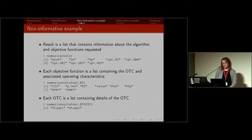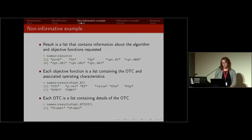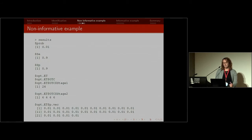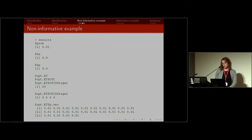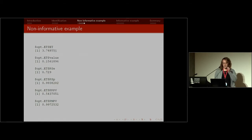Each objective function is a list containing the optimal testing configuration and the associated operating characteristics like accuracy measures. Each OTC is a list of stage 1 and stage 2 pool sizes. In three-stage testing, the stage 1 pool size is the 50 individuals you start with, and stage 2 pool sizes is the optimal set — say five groups of 10. When you print the results, the stage 1 optimal group size was 24, and then the stage 2 pool sizes was four groups of size 6. It also prints out the probability vector — important for informative testing — and the operating characteristics including expected number of tests, the value of the objective function, and accuracy measures.